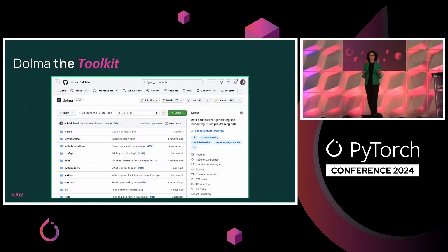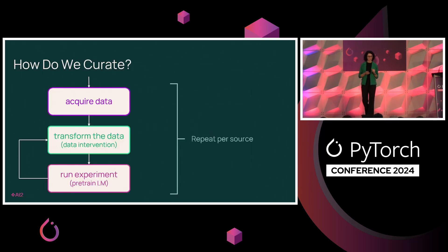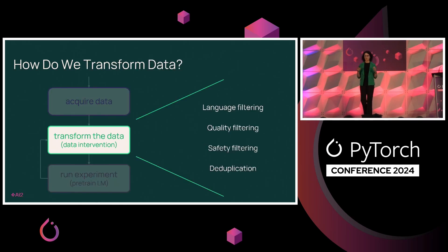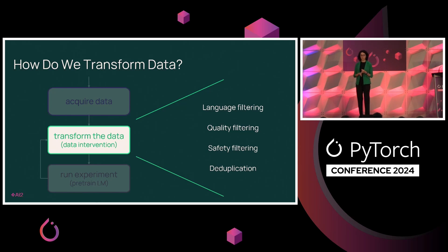We also have a toolkit that you can use for more data processing and curation to build your own datasets. How did we curate the data? We acquired data through the web, transformed it into a format suitable for pre-training, and ran a tight loop of experiments to verify the data provides good results. Inside this transformation phase, we did language filtering, quality filtering to remove personal data, toxic data, and safety filtering. Finally, we did multiple rounds of deduplication to produce a high-quality pre-training data source.